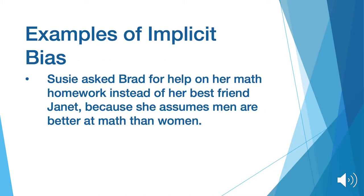Here are some examples of implicit bias. Susie asked Brad for help on her math homework instead of her best friend Janet, because she assumes men are better at math than women. This is implicit bias because Susie unconsciously believes that men are better at math than women because of societal beliefs.